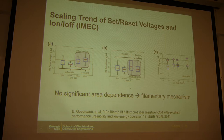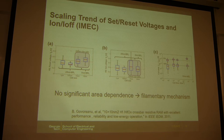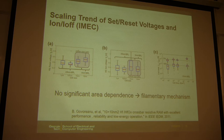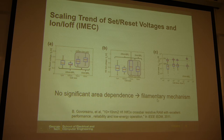Similarly, the set/reset voltage and ION/IOFF ratio show little dependence on cell area. This further confirms the filamentary switching mechanism — a conductive bridge that forms locally, maybe 10nm in diameter. No matter whether your device is 1 micrometer, 100nm, or 20nm, since the filament is only ~10nm in diameter and you may have only one or two, all conduction is concentrated along that bridge.